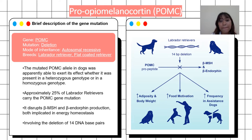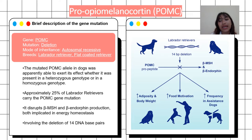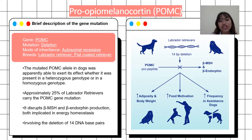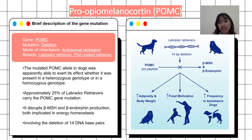It disrupts beta-MSH and beta-endorphin production, implicated in energy homeostasis, involving a deletion of 14 DNA base pairs. The 14-base-pair deletion in canine POMC at position 17,431,807 to 17,431,820 causes a frameshift mutation in the coding sequence.